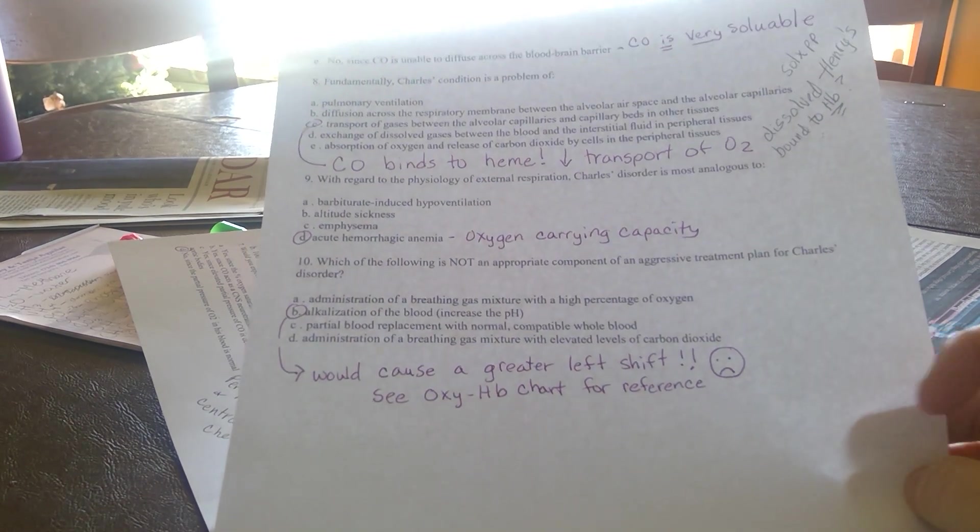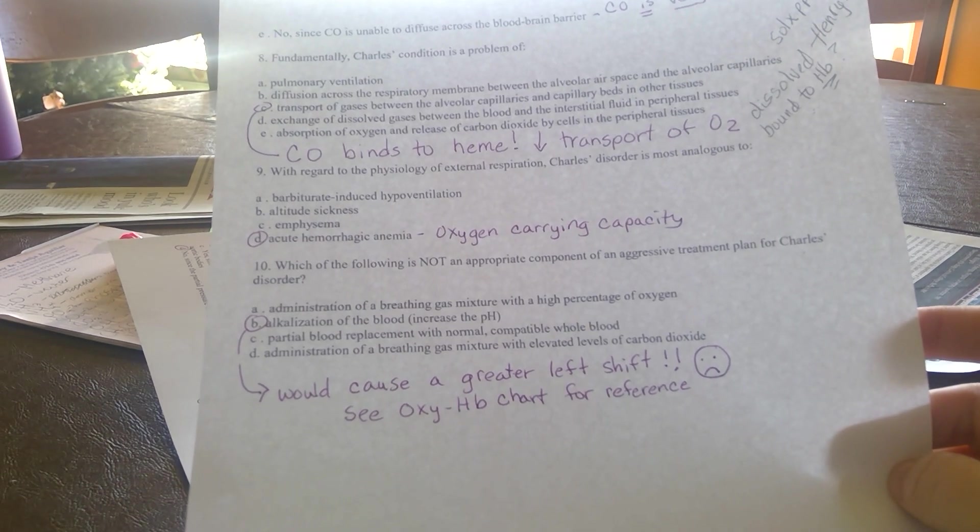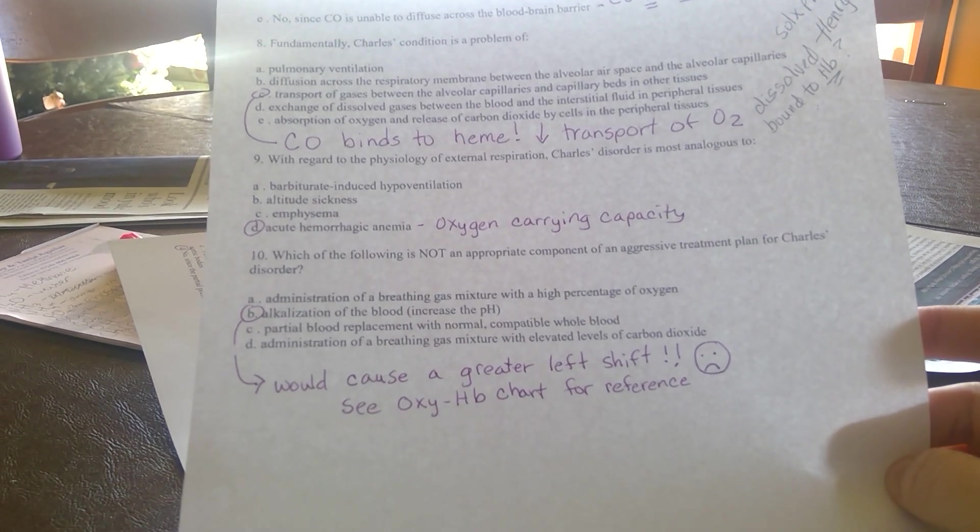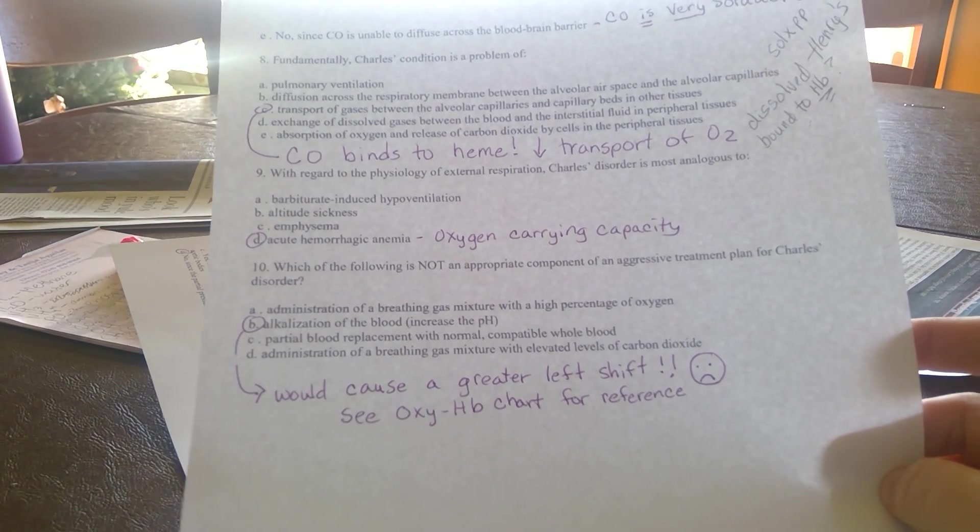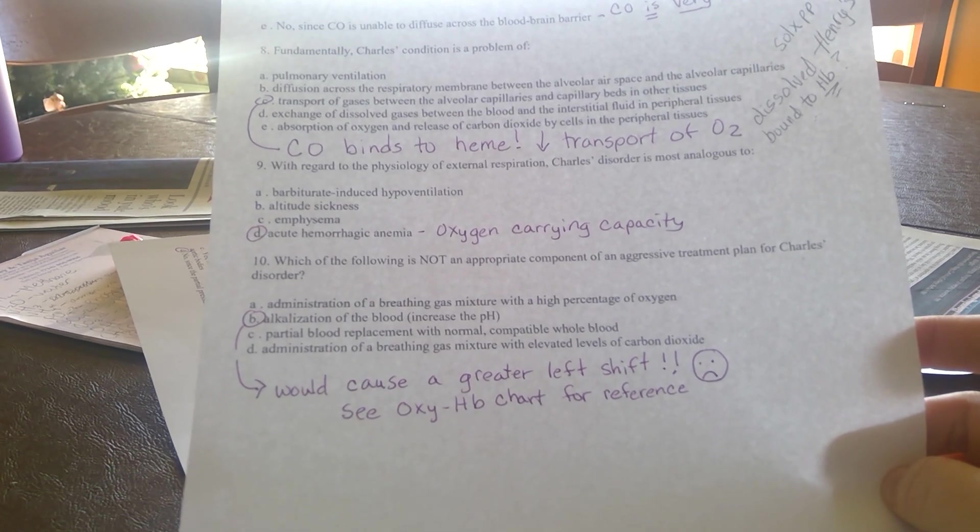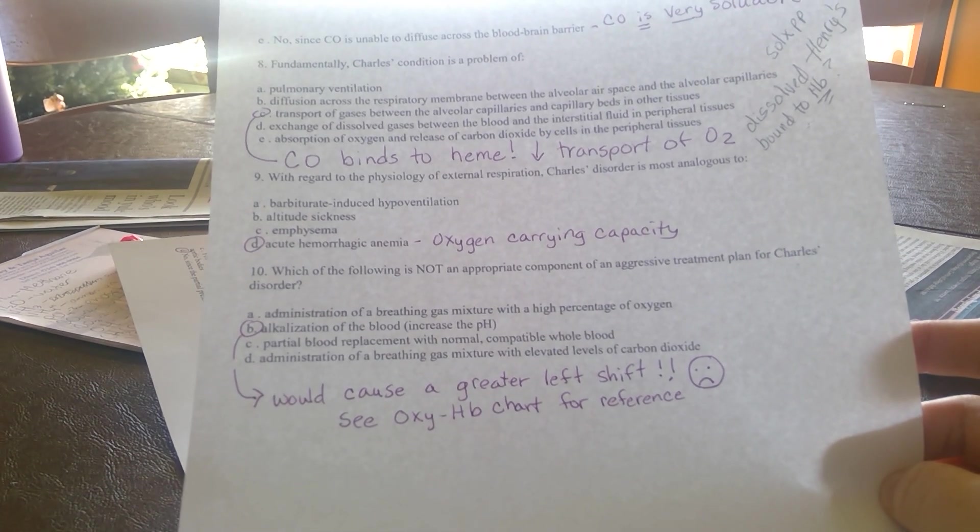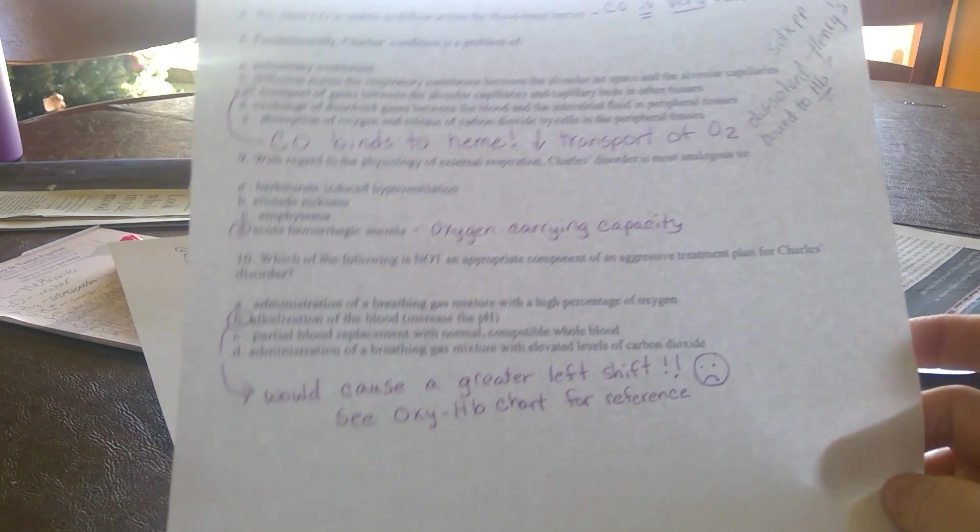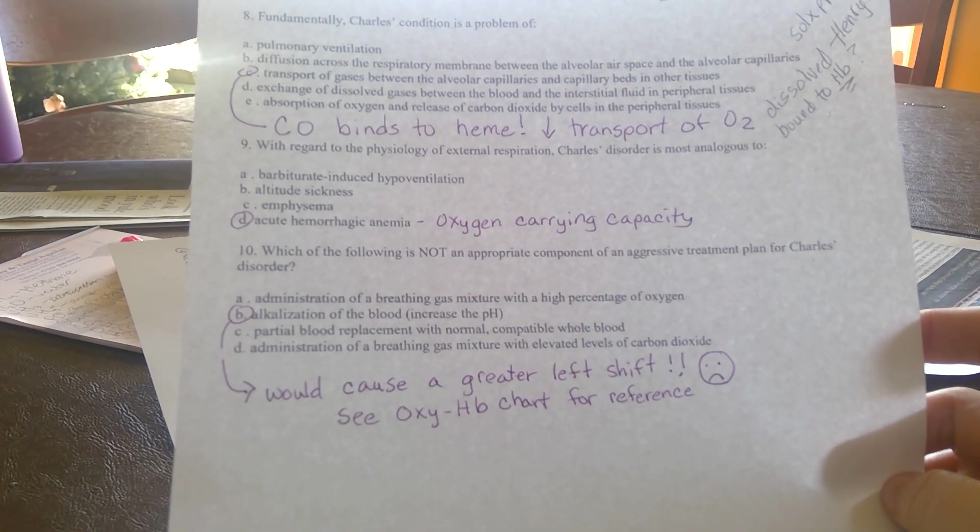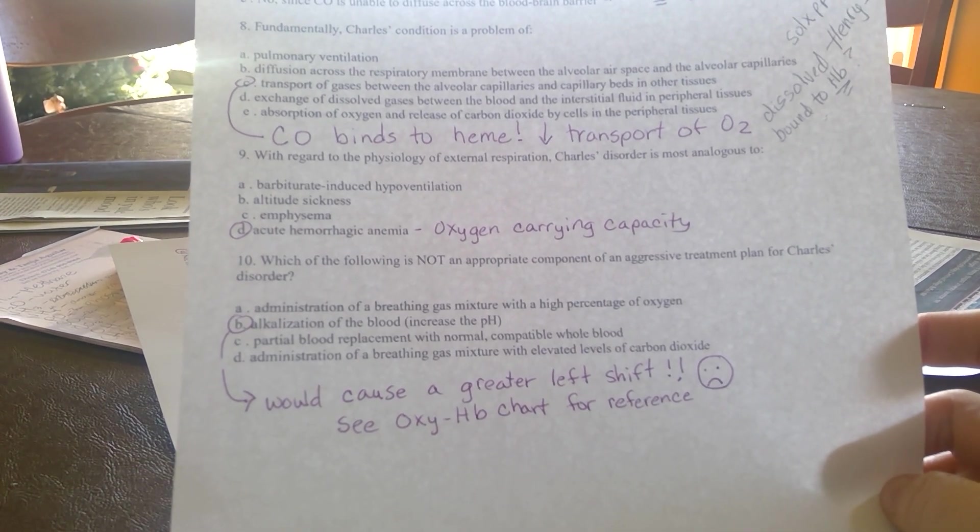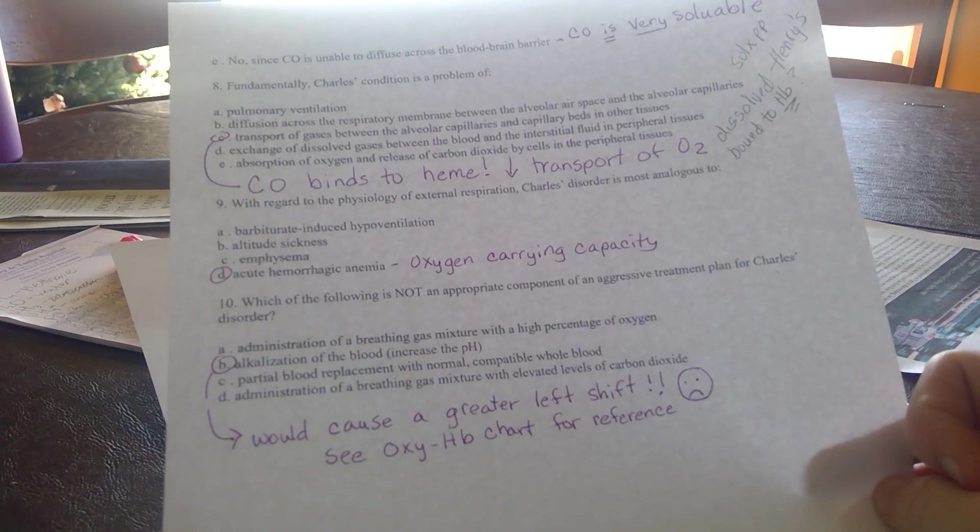Which of the following would not help Charles? We can give Charles more oxygen. More oxygen means we increase the partial pressure in his alveoli, which should increase the partial pressure in his blood. That means we're pushing off carbon monoxide from his hemoglobin. We can actually give him a blood transfusion. Pure blood, by pure I mean not poisoned by carbon monoxide, would certainly help him.